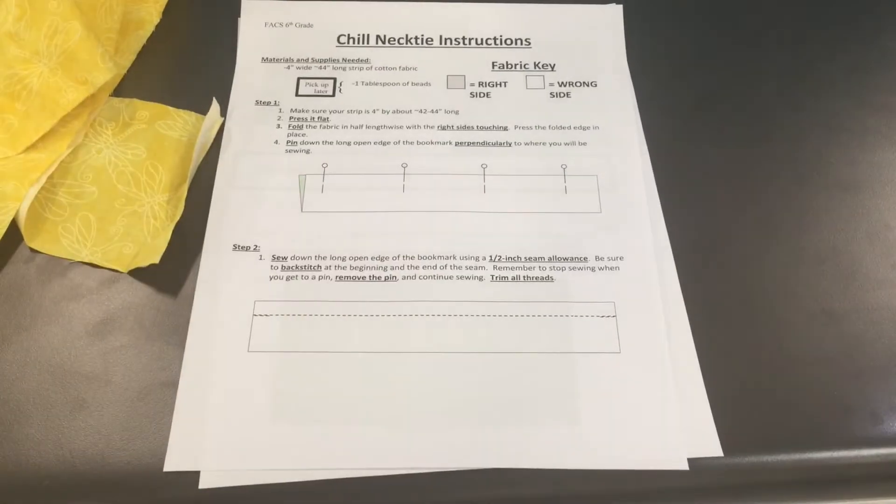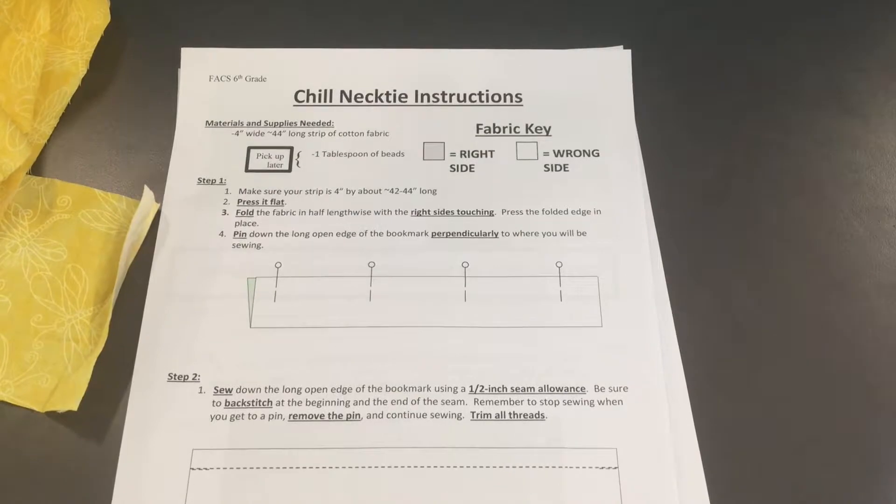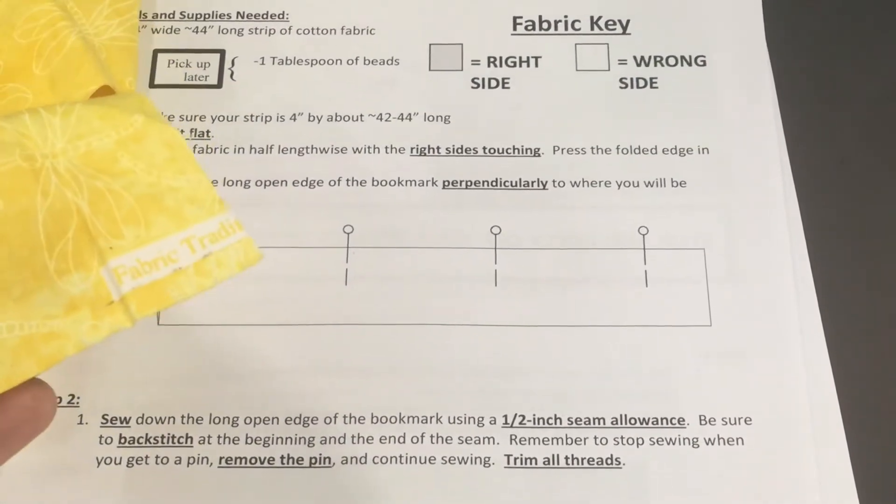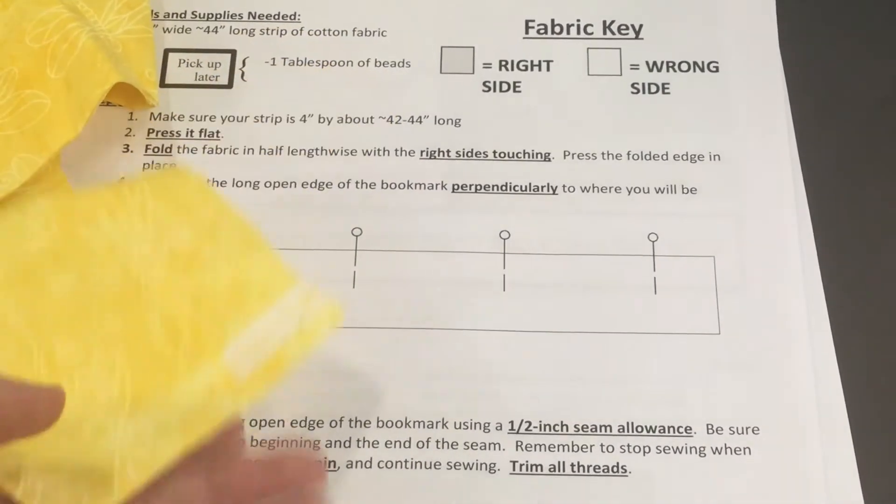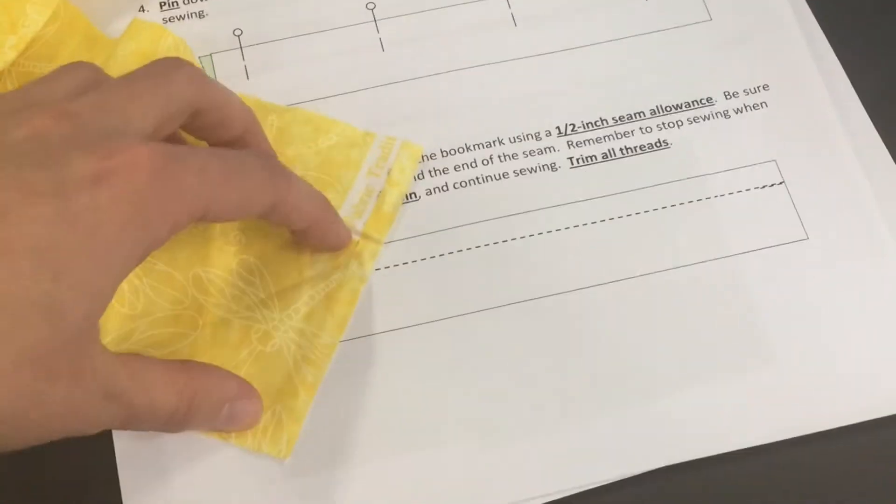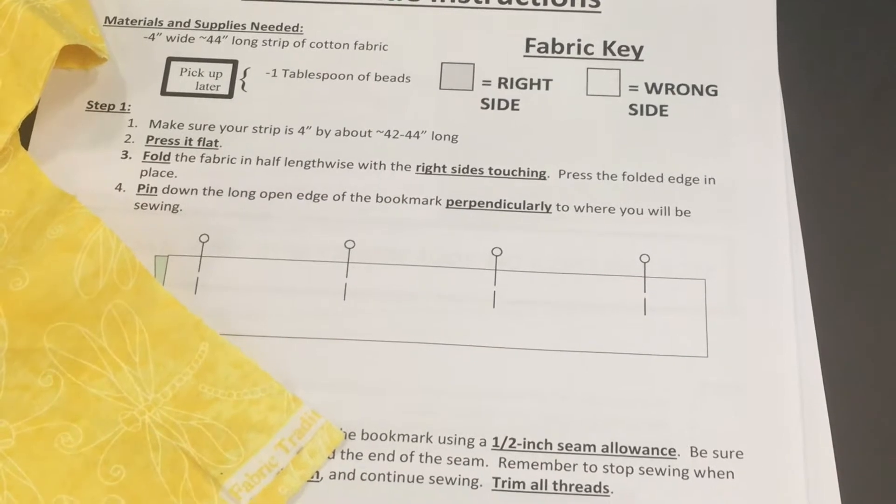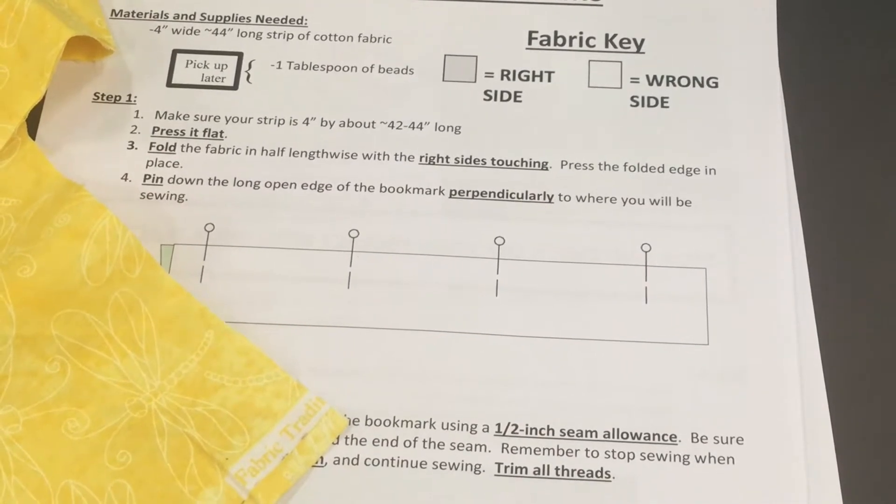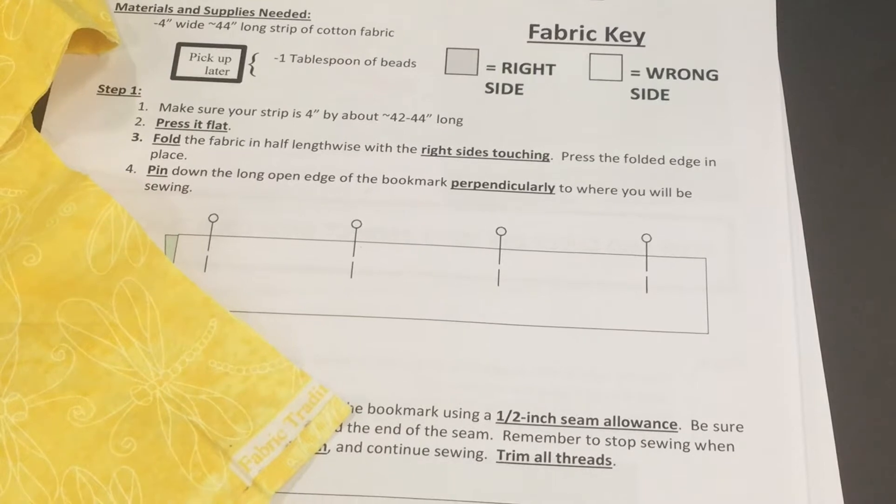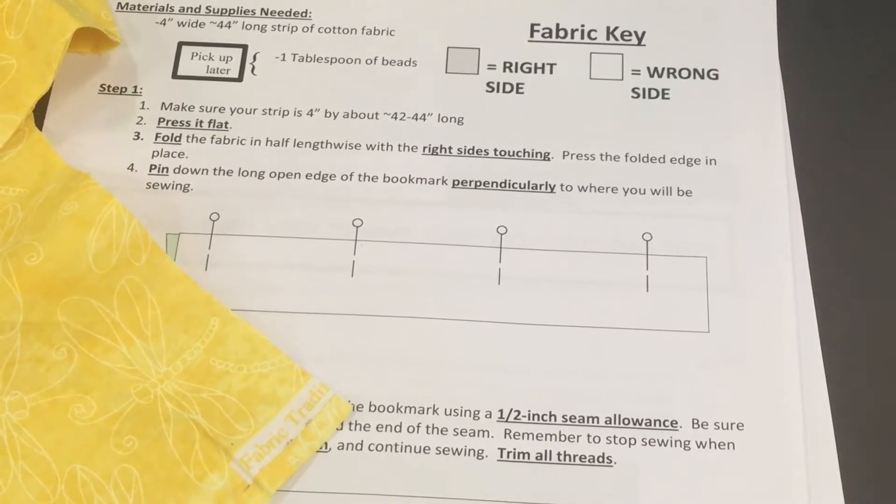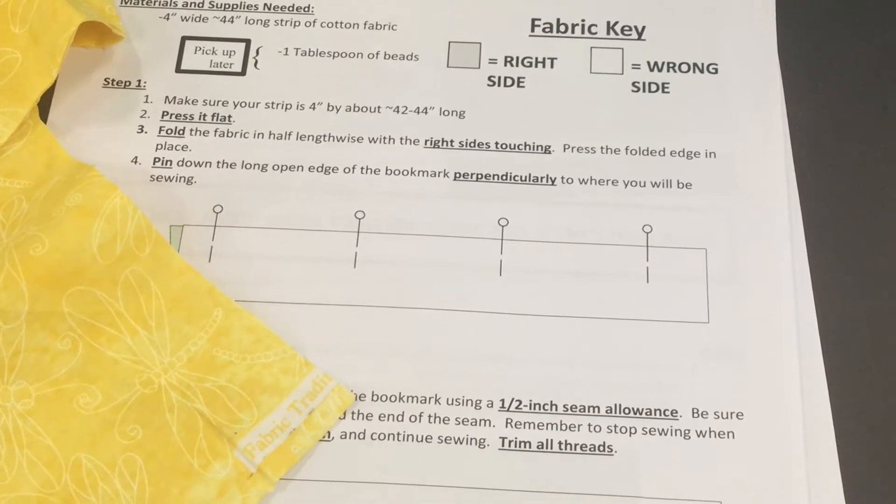First thing you're going to do is read your instructions. It says make sure your strip is four inches wide—so from here to here, four inches—by 42 to 44 inches long. You'll trim it to make it match your neck. Just note, if you got the fabric from me, it is the right size.